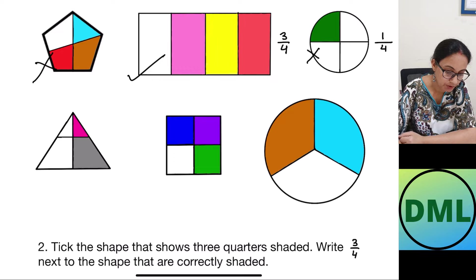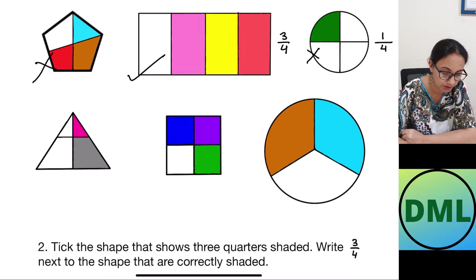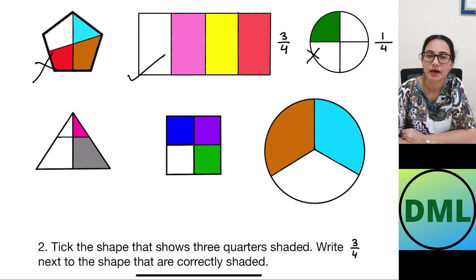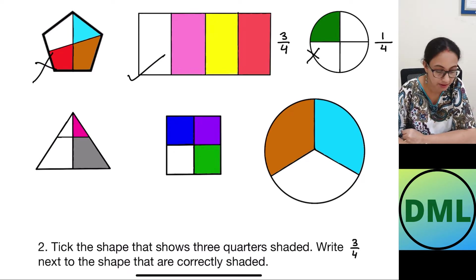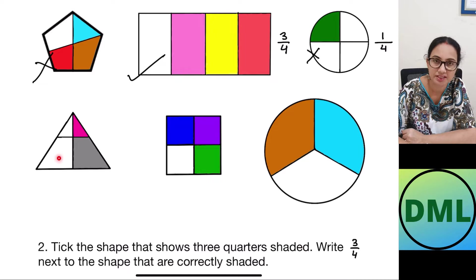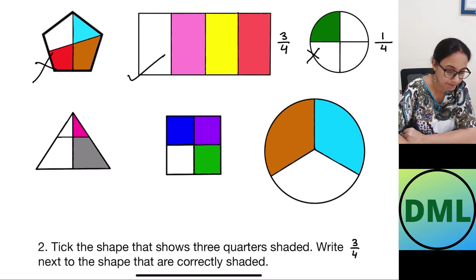Let's see the next shape — this is the triangle. I have divided it into one, two, three, and four parts. But are the parts equal? No — this part is smaller than this part. So that means this is not my answer.